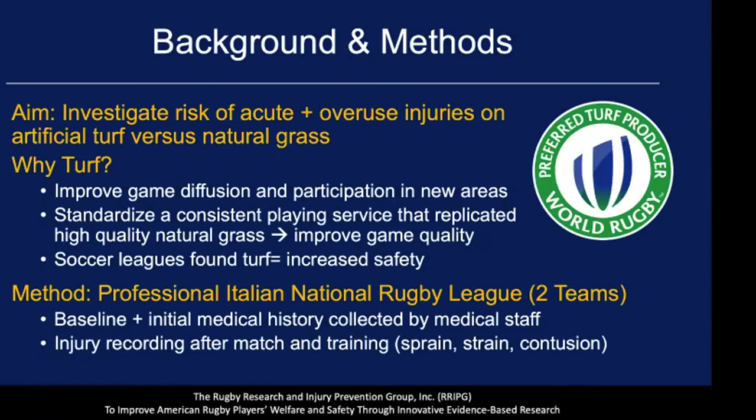The aim of this investigation was to examine the risk of acute and overuse injuries on artificial turf versus natural grass. While grass is the traditional playing surface for rugby, turf technology is being examined for places that lack the resources to maintain a grass pitch — to expand rugby participation into new areas, underserved areas, or areas that don't have the climate to sustain natural grass.